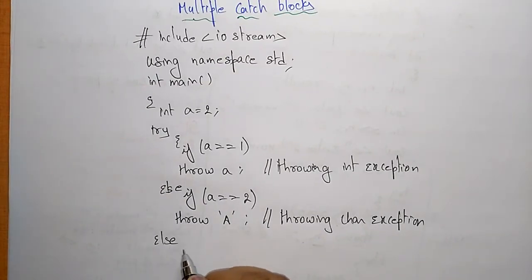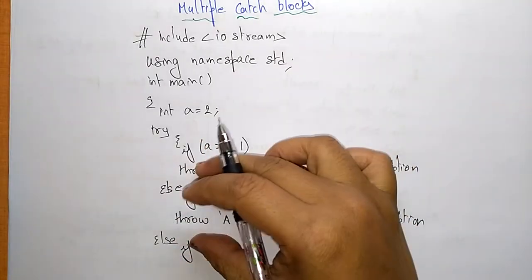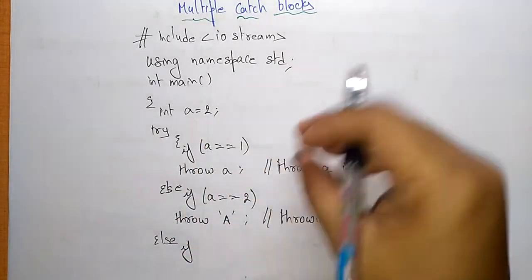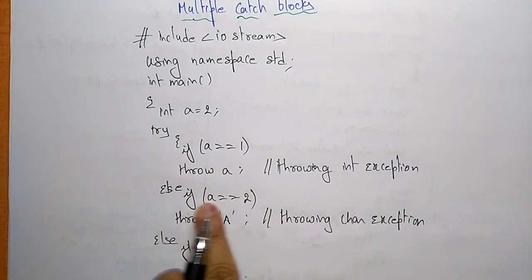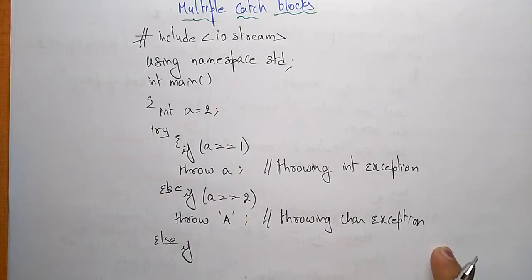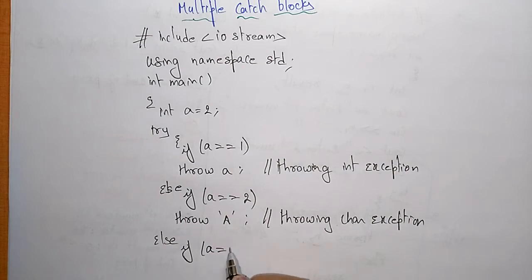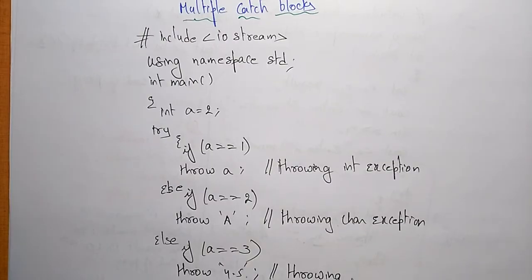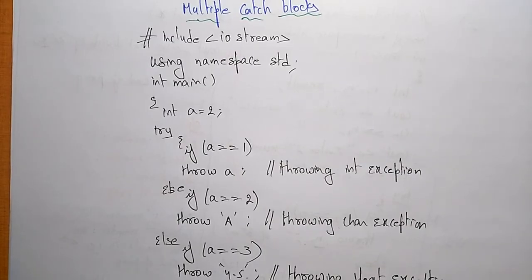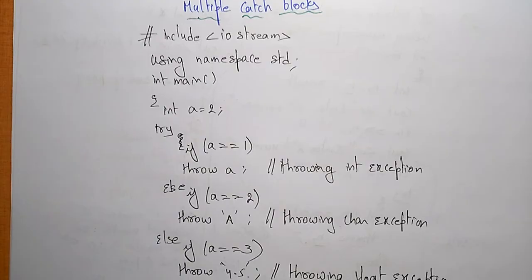Everything is written inside a single try block — there are no multiple try blocks. So: if a is equal to 1, it throws an integer exception; else if a is equal to 2, it throws a character exception; else if a is equal to 3, it throws 4.5 — a float exception. Then the try block closes.